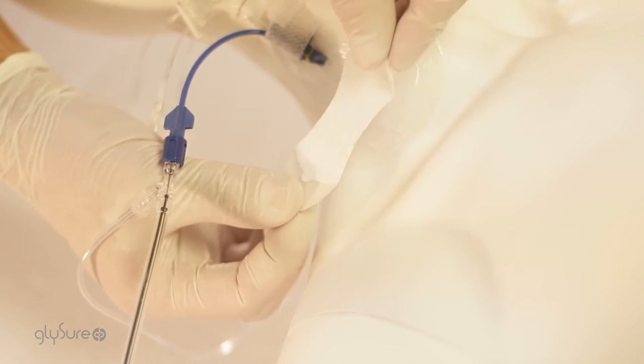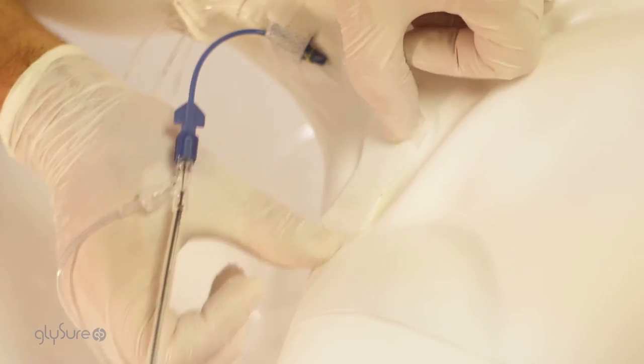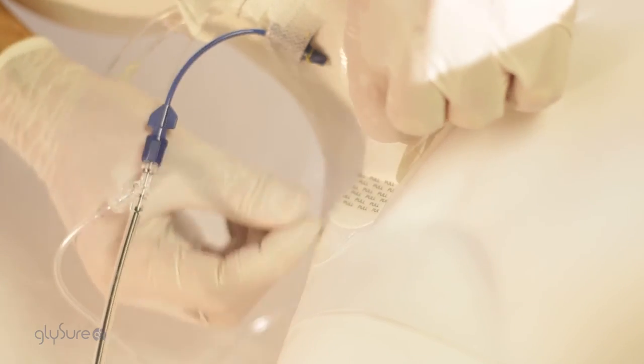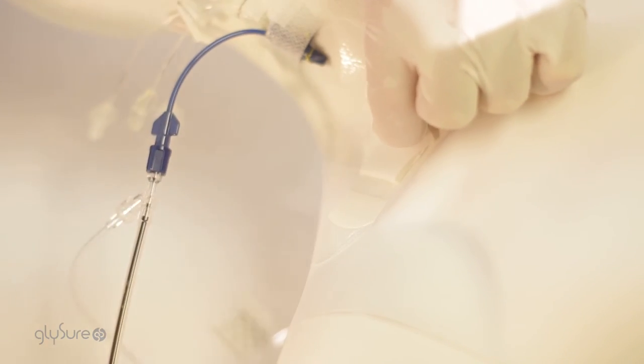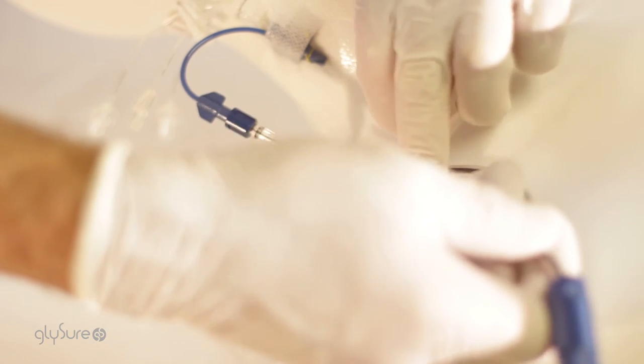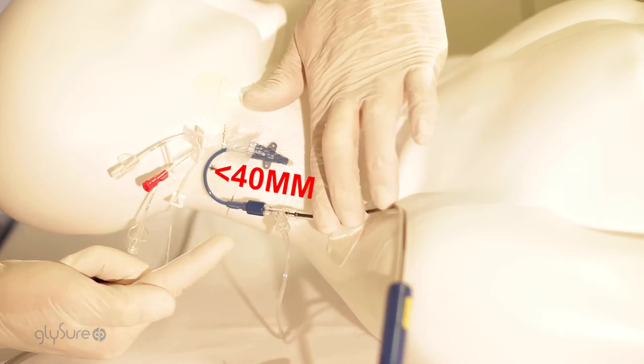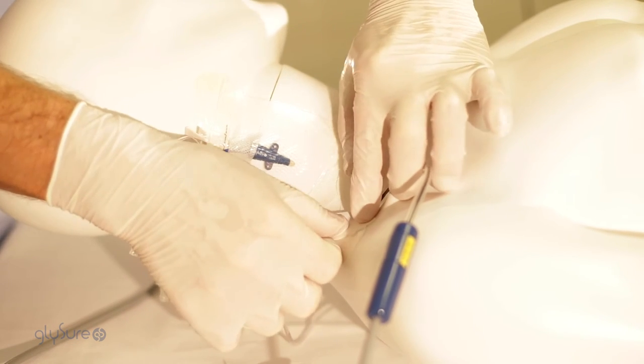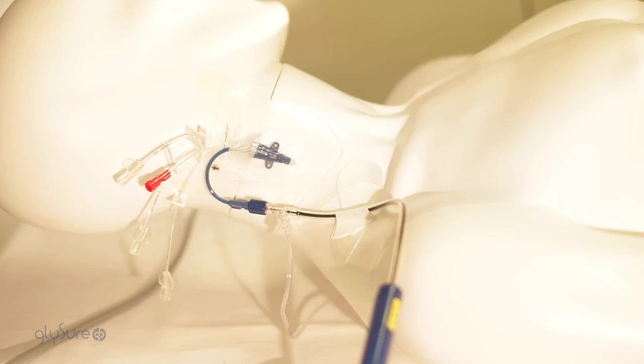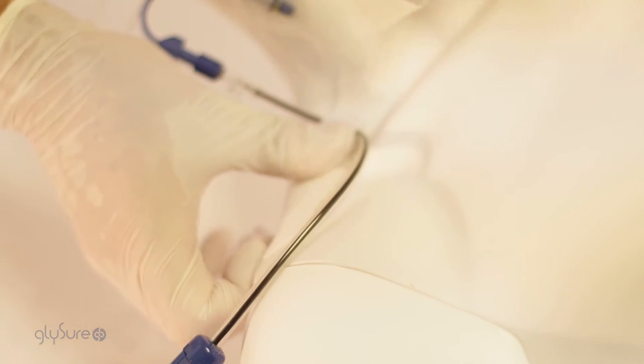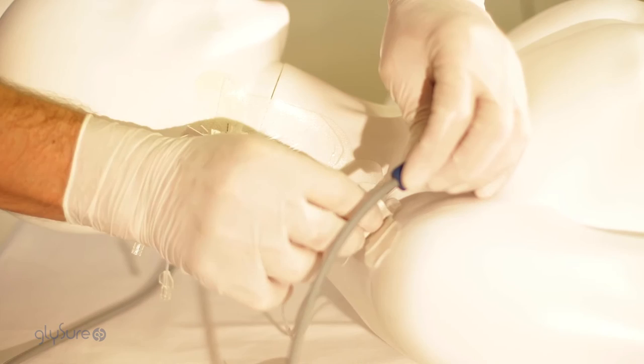Apply the first Grip Lock just below the Y-Site in a manner that does not put strain upon the sensor introducer and catheter connection, does not bend the sensor beyond a minimum bend diameter of 40 millimetres and does not interfere with nursing care. A second Grip Lock should be positioned behind the connector on the patient cable.